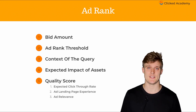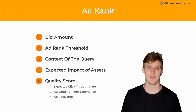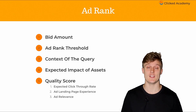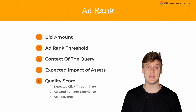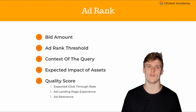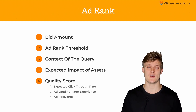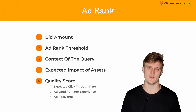There are five factors that determine ad rank. Number one is the bid. Your bid is the biggest factor in determining your ad rank. Your bid also influences where your ad will show on the search results page. The higher the bid relative to other advertisers, the higher you will appear on the page.